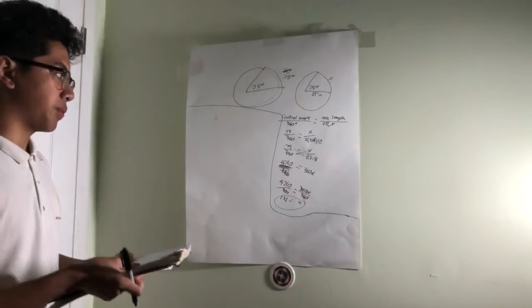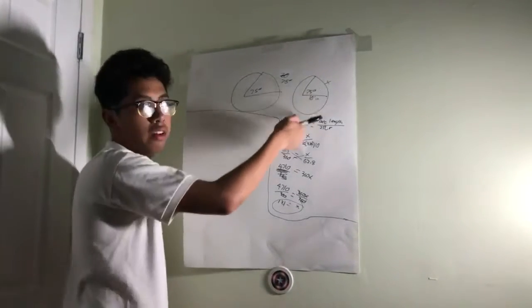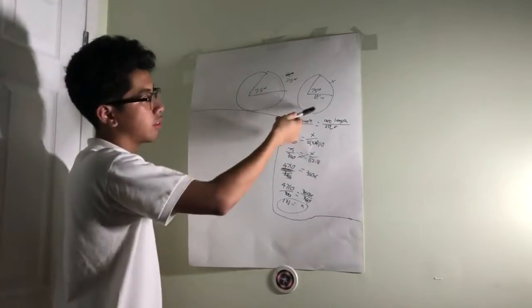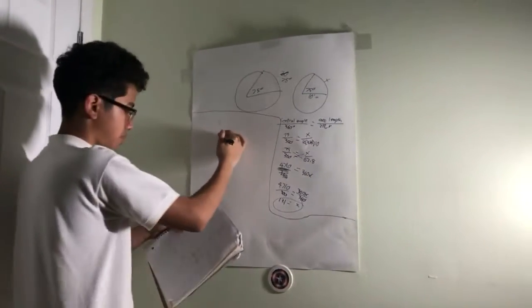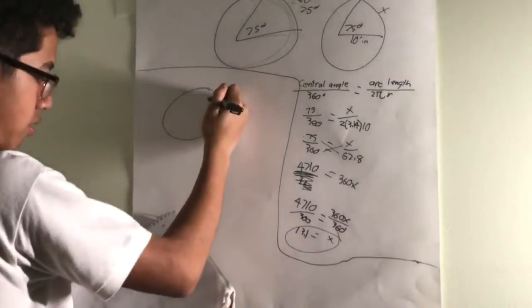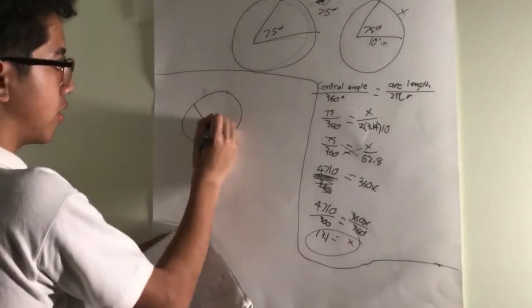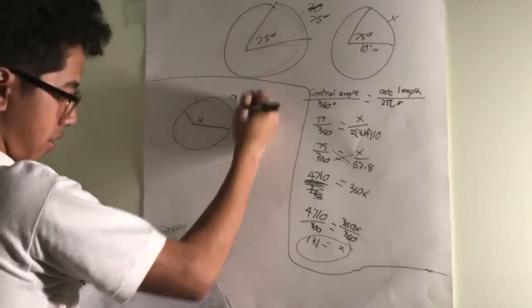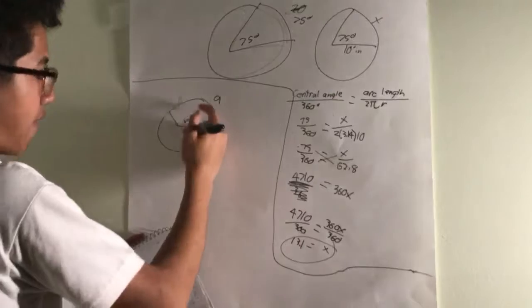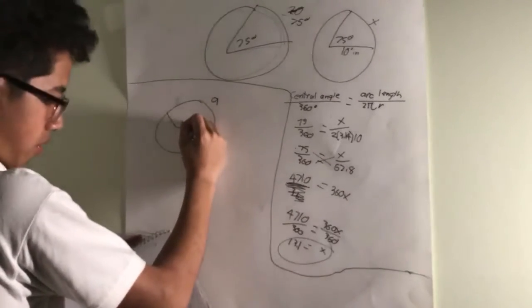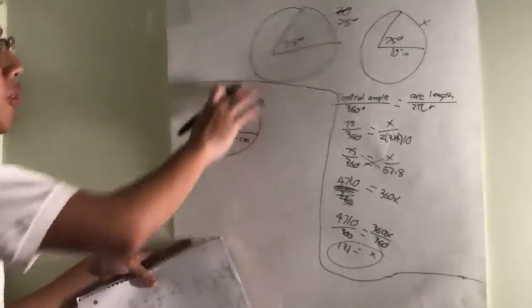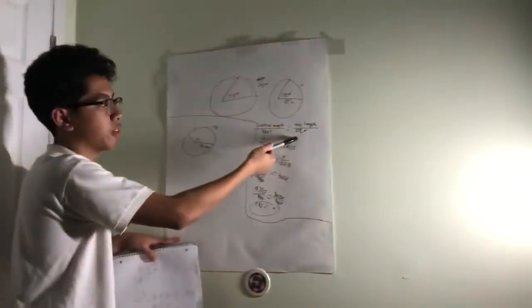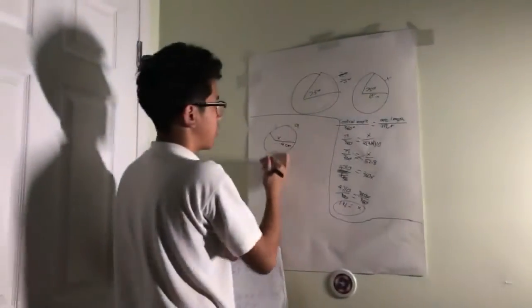The second example would be not finding the arc length, but finding the inner angle with the given arc length and the radius. So in this example, we will use the obtuse angle of x, with the arc length being 9, and the radius being 4 centimeters. So we already know the formula. Central angle over 360 equals arc length over 2 pi r. So we will use that.